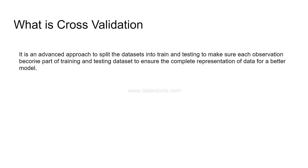Cross validation is an advanced approach to split the dataset into training and testing to make sure each observation becomes part of both the training and testing data set, ensuring complete representation of the data for a better model. When you build the statistical model, each and every observation will be validated using cross validation, making your model much more robust and exposed to 100% of the data.